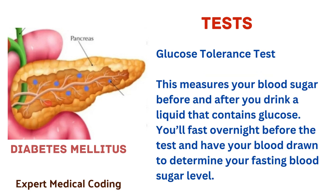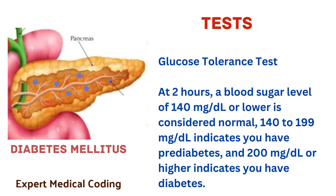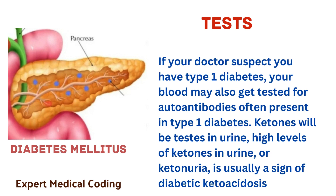The glucose tolerance test measures your blood sugar before and after you drink a liquid that contains glucose. You will fast overnight before the test and have your blood drawn to determine your fasting blood sugar levels. Then you will drink the liquid and have your blood sugar levels checked at 1 hour, 2 hours, and possibly 3 hours afterwards. At 2 hours, a blood sugar level of 140 mg/dL or lower is normal; 140 to 199 mg/dL indicates prediabetes; and 200 mg/dL or higher indicates diabetes. If your doctor suspects type 1 diabetes, your blood may also be tested for autoantibodies often present in type 1 diabetes, and ketones will be tested in urine. High levels of ketones in urine is usually a sign of diabetic ketoacidosis.